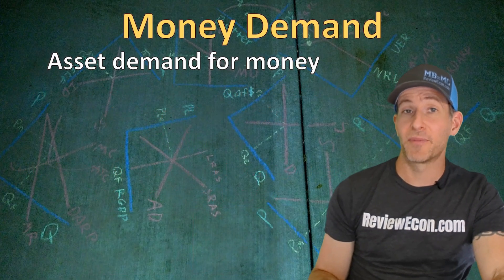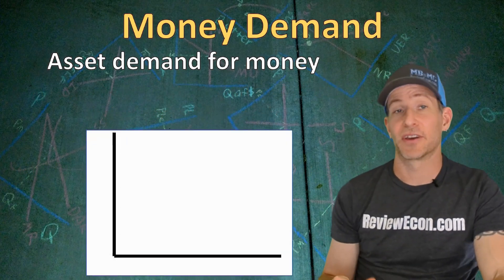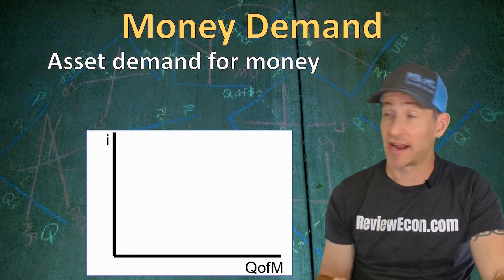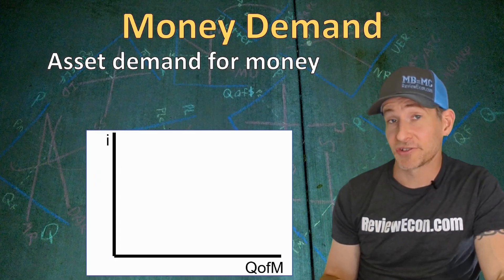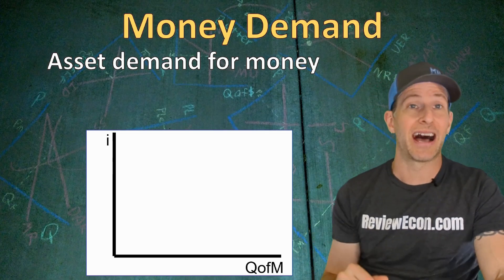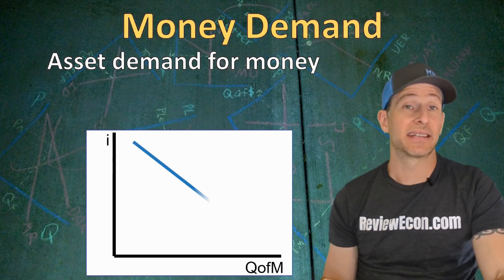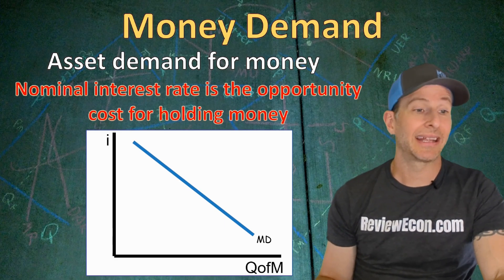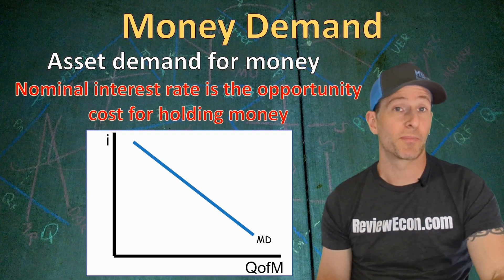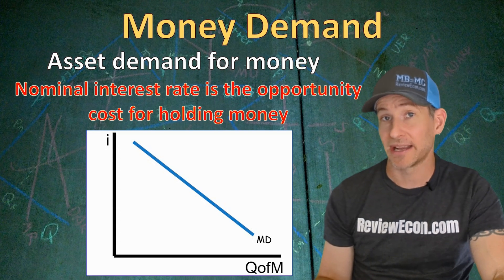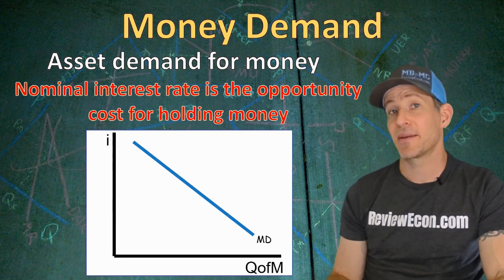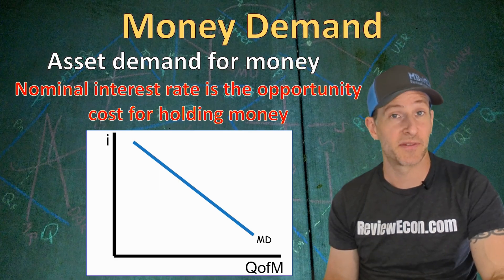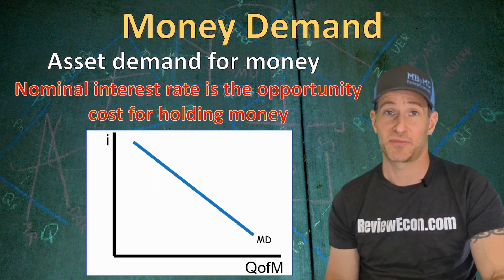If we graph out the demand for money, on the x-axis we have the quantity of money, and on the y-axis we have the nominal interest rate — you can either write nominal interest rate or abbreviate it as little i. The asset demand for money is a downward sloping demand curve because the nominal interest rate is the opportunity cost for people choosing to hold their wealth as money. If I hold my wealth as cash, I'm not earning the interest I could have earned if I put my wealth in a certificate of deposit or some other interest-bearing asset.